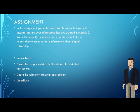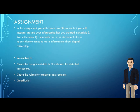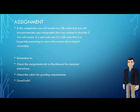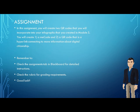Your assignment for this module is a really simple one and it's quite a fun one. What you're going to do is create two QR codes. One is going to be put into your infographic and it's going to be a 'me code' — it's going to be all about you. The other one is going to go in your infographic for module 5 and it's a hyperlink that's going to connect to more information about digital citizenship.